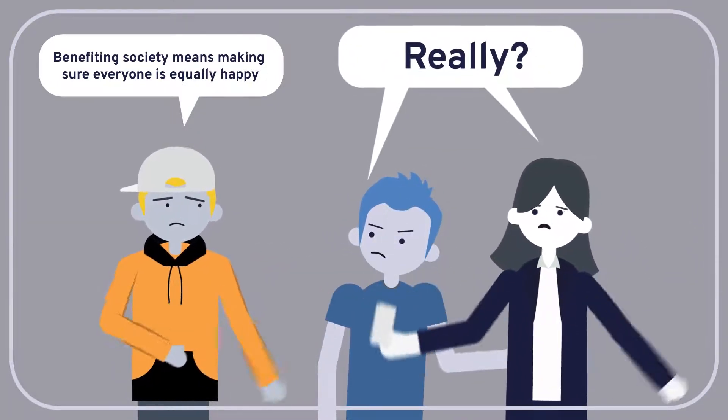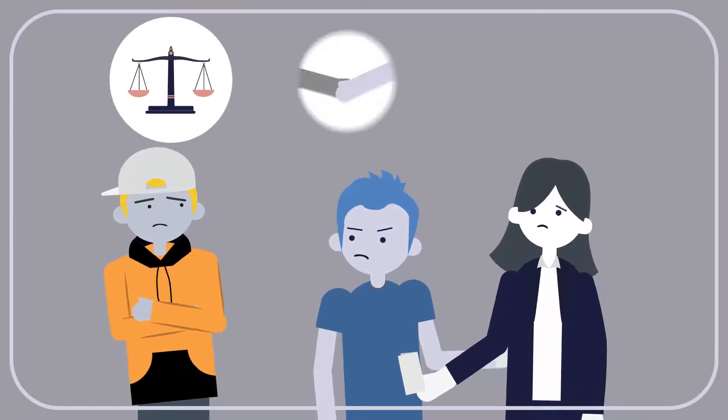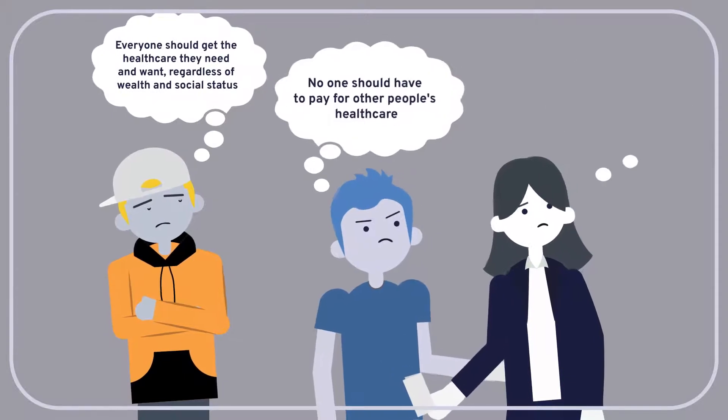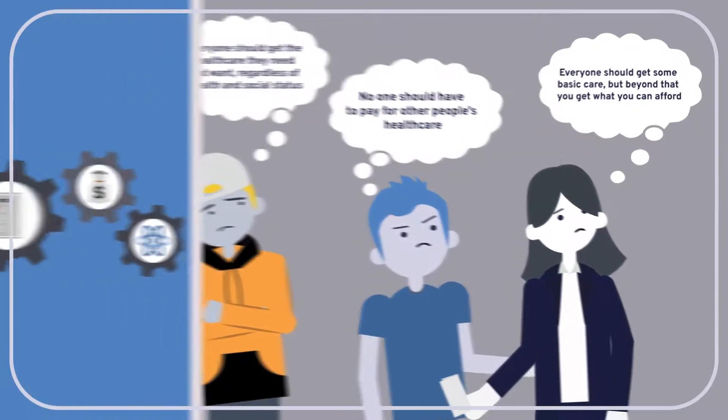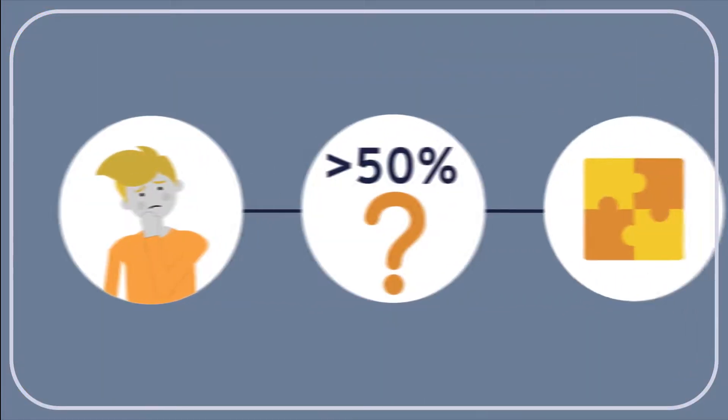We don't all agree on what it even means to benefit society. Disagreements about morality, values, and so on are pervasive, and these disagreements will lead us to different views about what's really best. Given the empirical and philosophical complexities of discerning the common good, how can we be confident that a typical voter is more than 50% likely to know what's in the common interest? It seems like we can't.